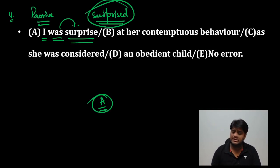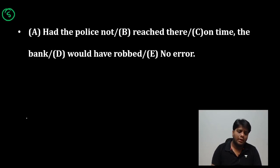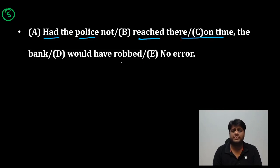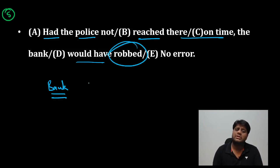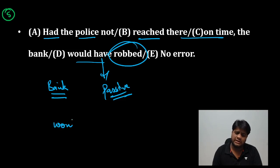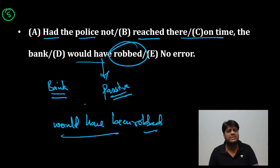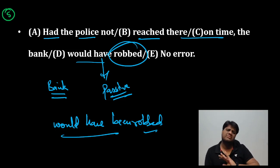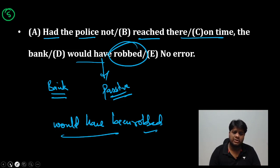Question number 5: 'Had the police not reached there on time, the bank would have robbed.' अगर police वहाँ time से नहीं पहुँची — bank robbed नहीं, bank को लूटा जाता — तो यहाँ passive लगानी है। यह बनेगा 'would have been robbed'। इस तरीके से आप चीज़ों को elaborate करते जाओ और आराम से solve करते जाओ — मज़ा आ जाएगा।